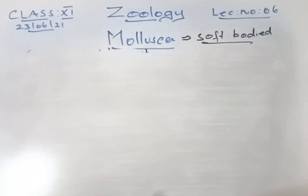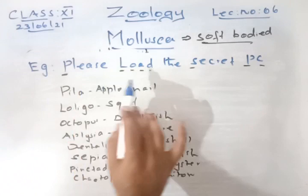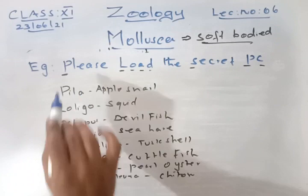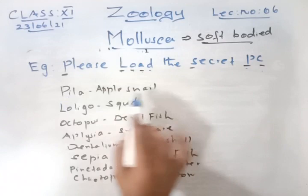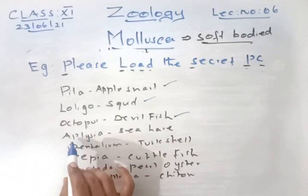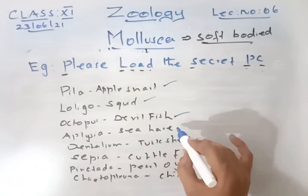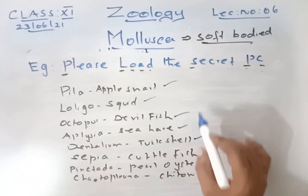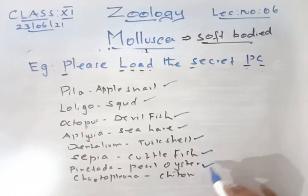For examples of Mollusca, remember: Please load the secret PC. P for Pila (apple snail), L for Loligo (squid), O for Octopus (devil fish), A for Aplysia (sea hare), D for Dentalium (tusk shell), S for Sepia (cuttlefish), P for Pinctada (pearl oyster), C for Chiton. These are all examples under Mollusca.